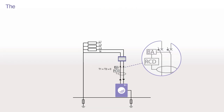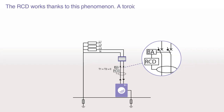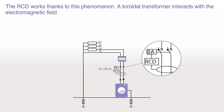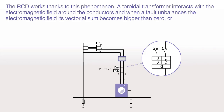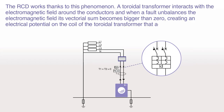The RCD works thanks to this phenomenon. A toroidal transformer interacts with the electromagnetic field around the conductors, and when a fault unbalances the electromagnetic field, its vectorial sum becomes bigger than zero, creating an electrical potential on the coil of the toroidal transformer that acts on the tripping mechanism of the switch.